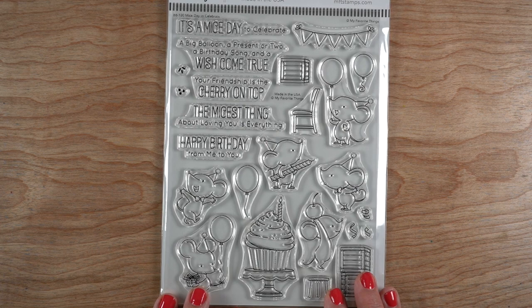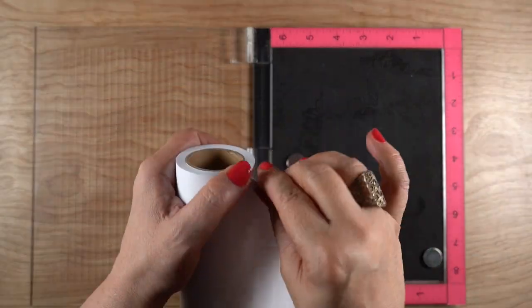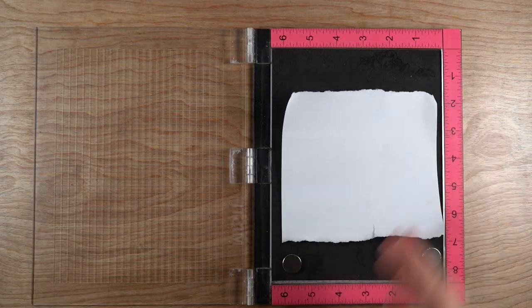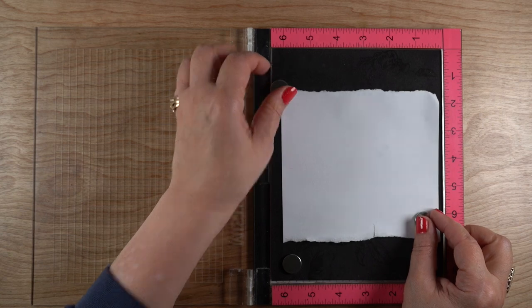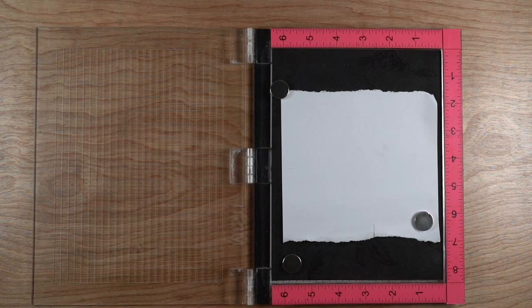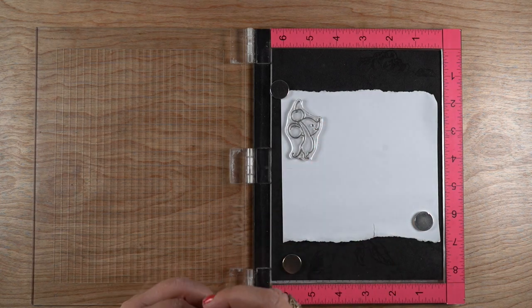So I'm going to use a Mice Day to Celebrate stamp set and start out with Eclipse tape. This is a big roll of basically what a post-it note is - it has about that amount of stickiness. I put it in the Misti, which I use for all my stamping.